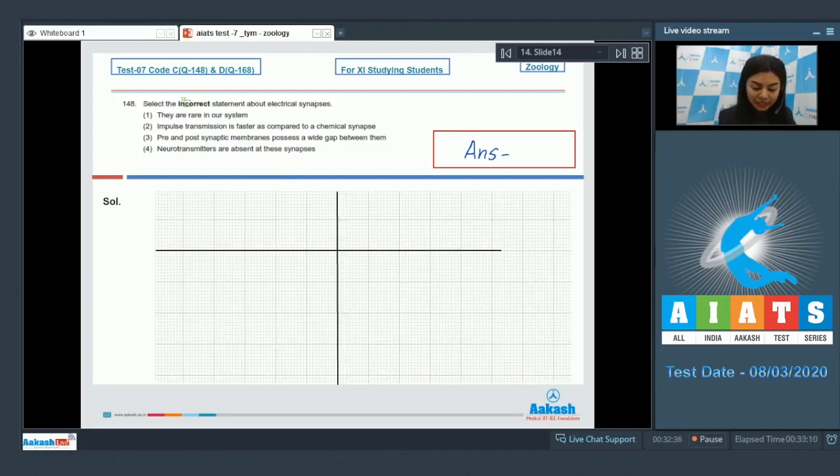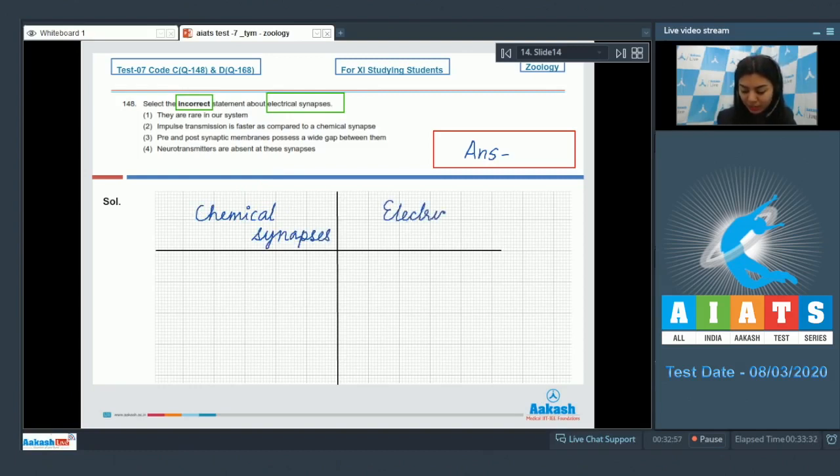We have to select the incorrect statement about electrical synapses. Remember that majority of synapses in the human body are chemical synapses, whereas electrical synapses are very rarely found, although electrical synapses are faster than chemical synapses. So option 1, that they are rare in our system, is a correct statement. Option 2, impulse transmission is faster compared to chemical synapse, is also correct.